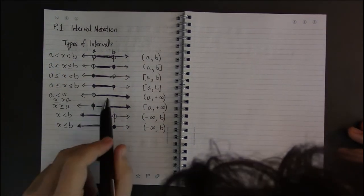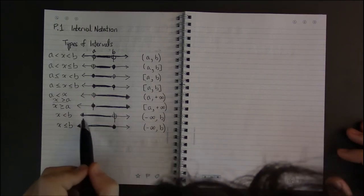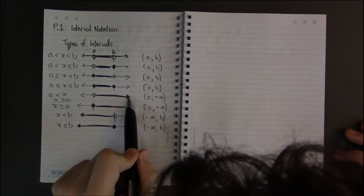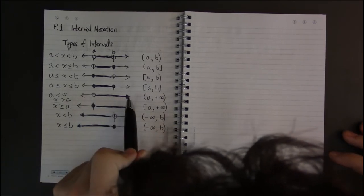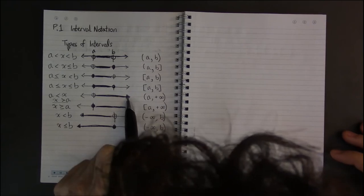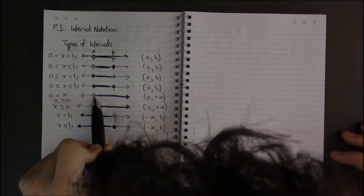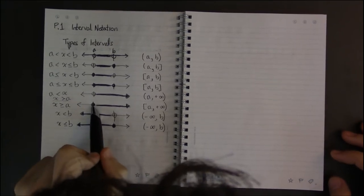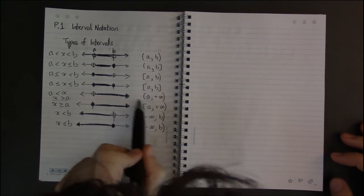Now in these last few examples, we have what we call an unbounded interval, an interval of infinite length, because we have a left end and the right just goes on forever.